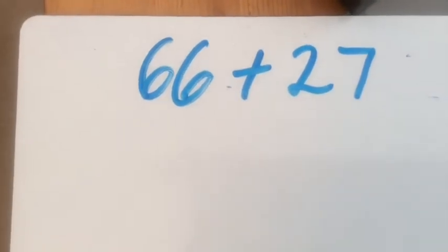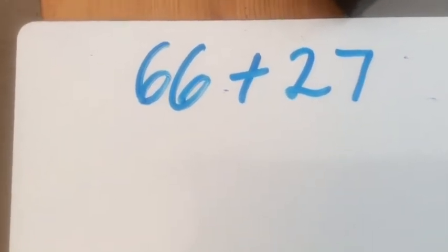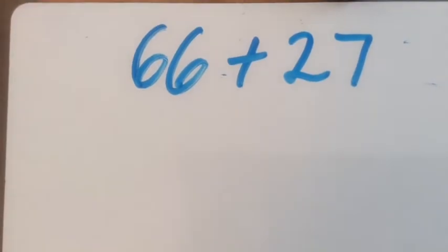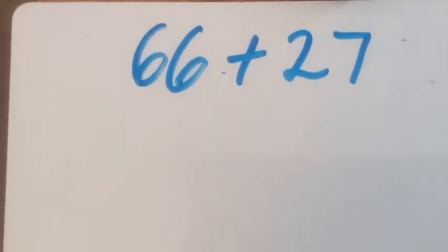Have a go at this one on your whiteboards. How would you do it? Partition twenty-seven first and what do you get?